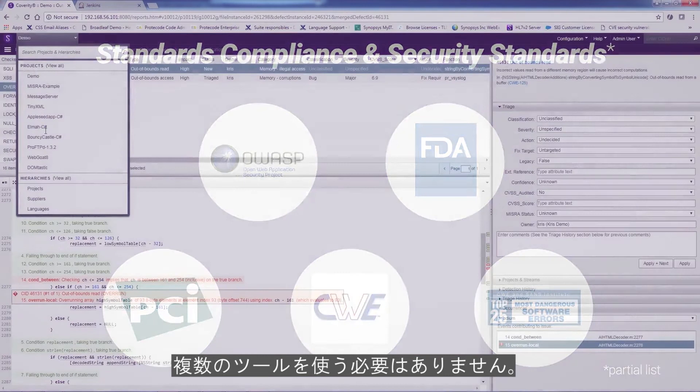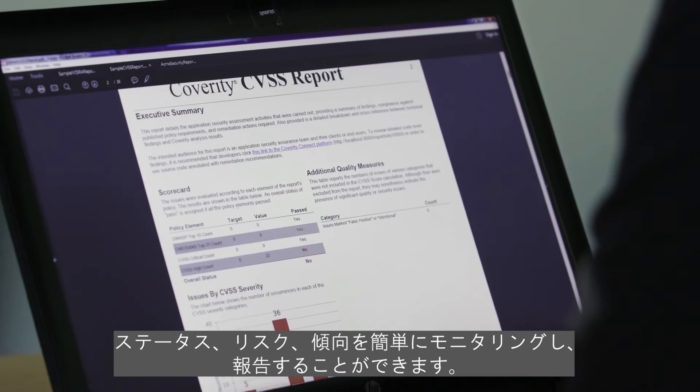Coverity is the only SaaS solution that comprehensively helps customers achieve compliance and certifications for embedded safety, reliability, and automotive standards, as well as security standards. No need for multiple tools. And Coverity Policy Manager lets development managers easily monitor and report on status, risks, and trends.